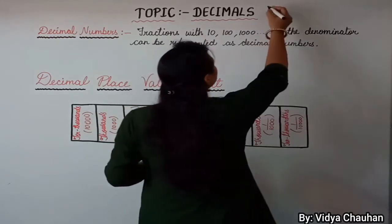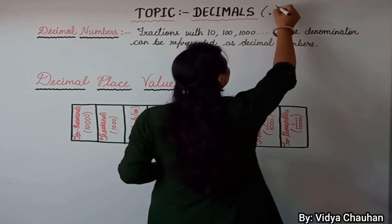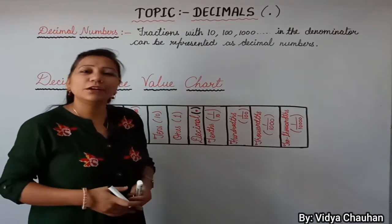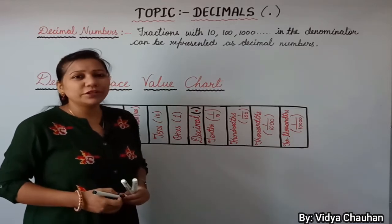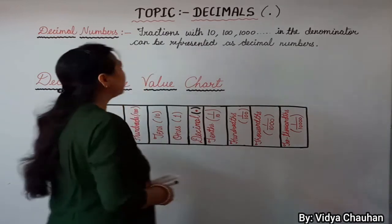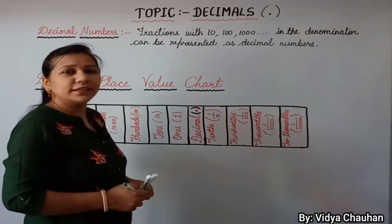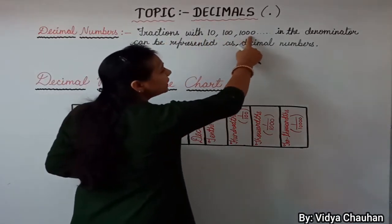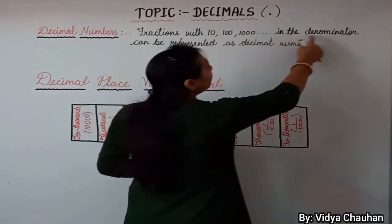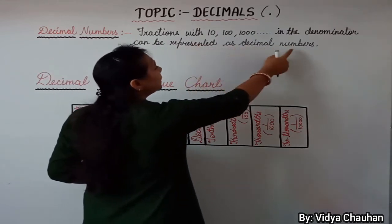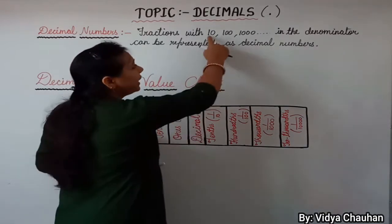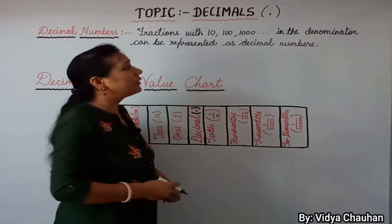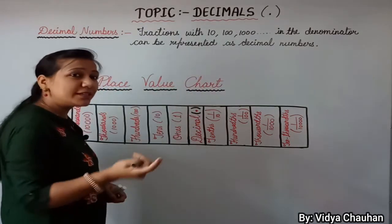A decimal is actually just a simple dot, but it's not just a dot — this dot actually separates a number into two different parts. Let us have a quick revision of the decimal numbers definition. Decimal numbers: fractions with ten, hundred, thousand, and so on in the denominator can be represented as decimal numbers. All those fraction numbers which have ten to the power terms in the denominator can be expressed as decimal numbers.